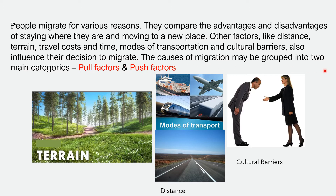The causes of migration may be grouped into two main categories: pull factors and push factors. Pull factors are those factors which attract people towards a country, while push factors force people to move out of their country and go to some other place where they will start their work or continue to live and carry on with an occupation.